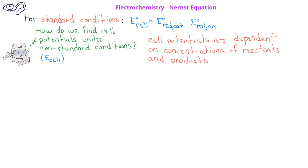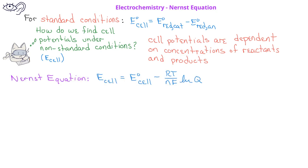We see this in the Nernst equation, which indicates that the cell potential is equal to the standard cell potential minus RT over NF multiplied by the natural log of the reaction quotient Q.